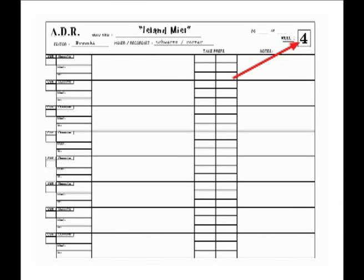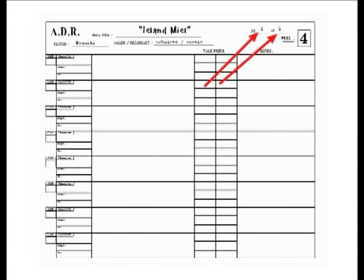The reel number is listed. All ADR sheets should be organized by reels for easier organizational purposes. You also list the page number as well as how many pages make up the ADR cue sheet list for that particular reel.